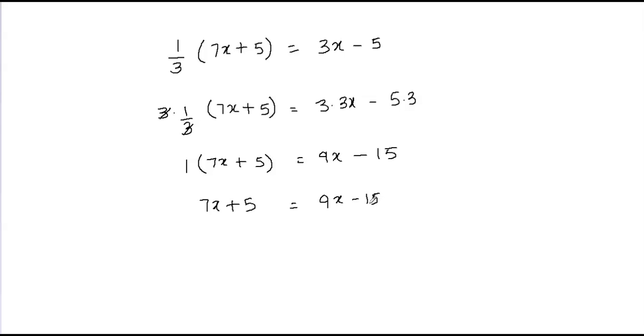Now I have variable terms on both sides of my equation. Whenever I have variable terms on both sides, I always eliminate the smaller variable term to avoid getting a negative coefficient with the variable. Here 7x is smaller than 9x, so I'll eliminate 7x.